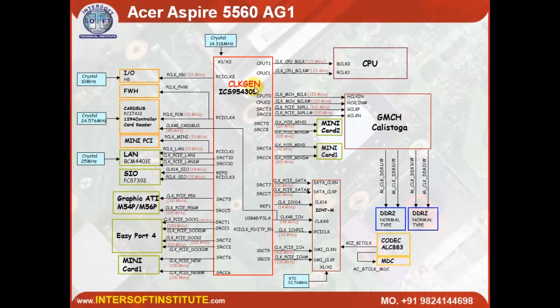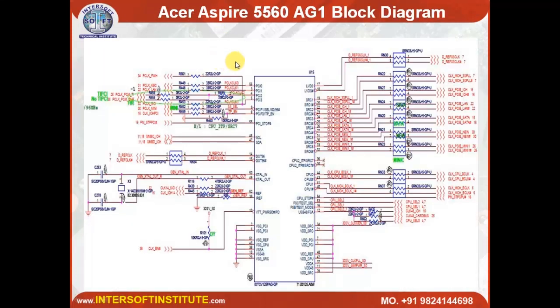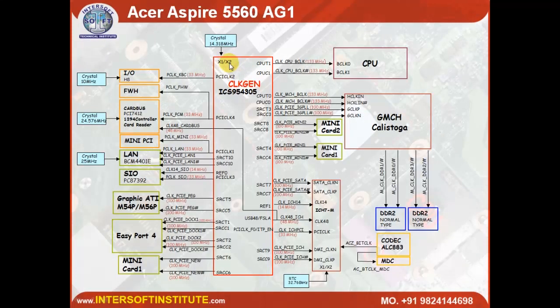In some boards you can see the clock generator IC with the crystal connected at X1 and X2. It requires power, so whatever power is available will be connected. Then the clock generator gives the signal to the CPU, then to the GMCH, and GMCH further supplies the DDR RAM.